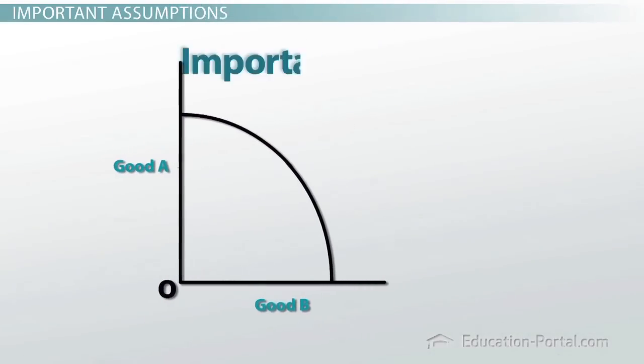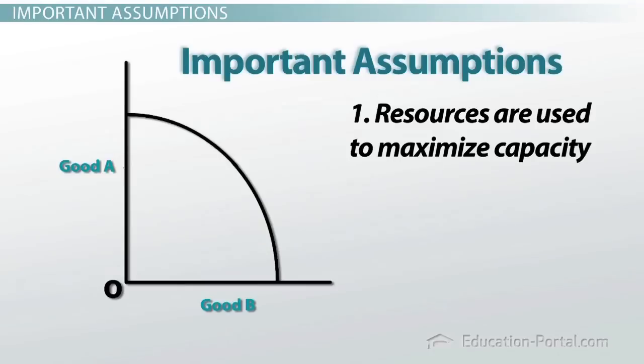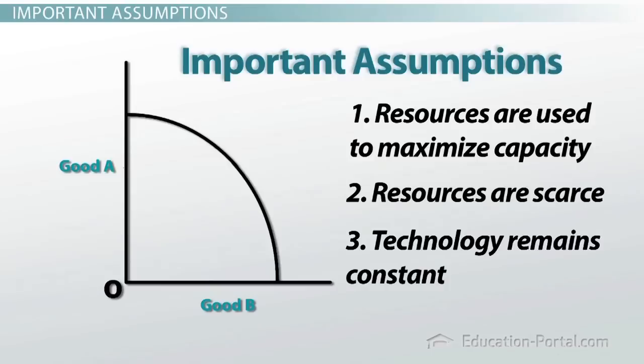There are three important assumptions involved in using the production possibilities model. One, resources are used to maximize capacity. Very important. Two, resources are scarce. And three, technology remains completely constant.